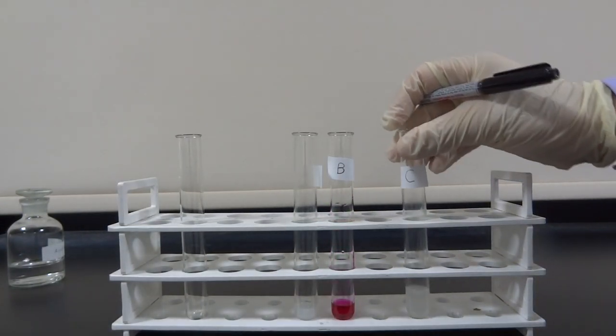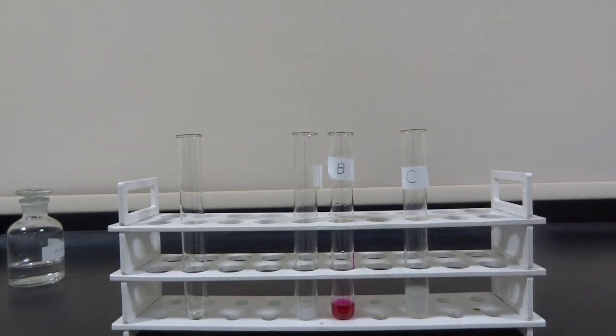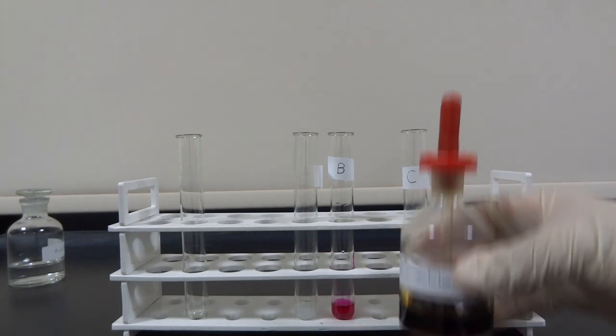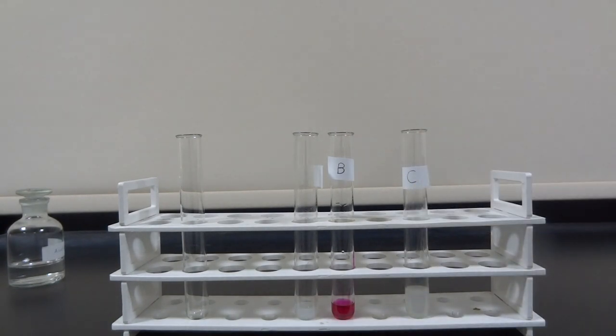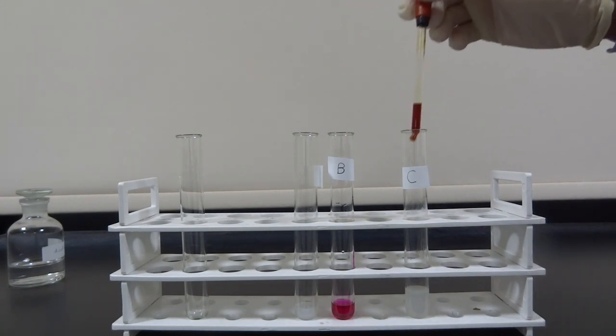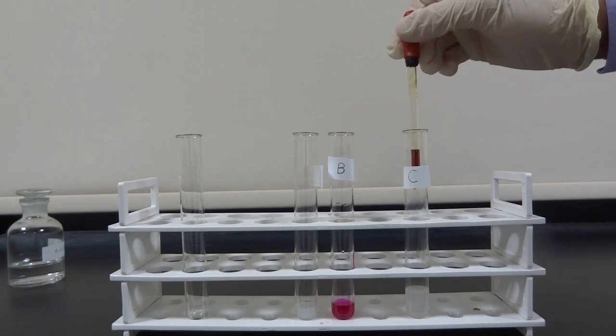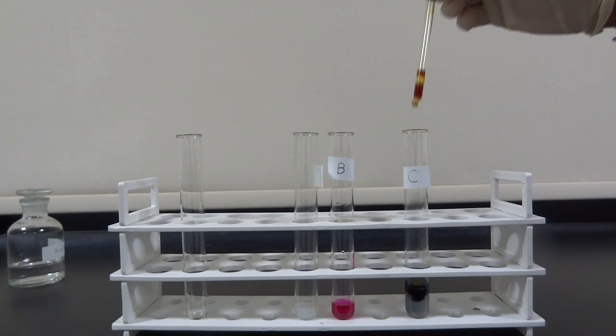In another example, the scientist would like to know if solution C contains starch. Already he knows that starch will turn iodine from brown into dark blue. So he placed a few milliliters of solution C in a test tube, then added a few drops of iodine. As there's a change of color from brown to dark blue, this reveals that solution C contains starch.